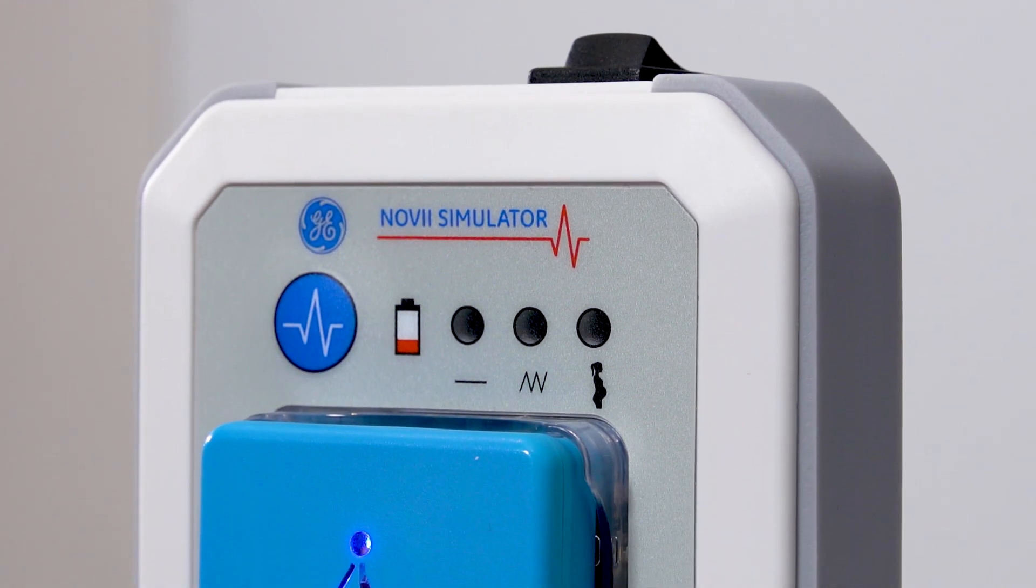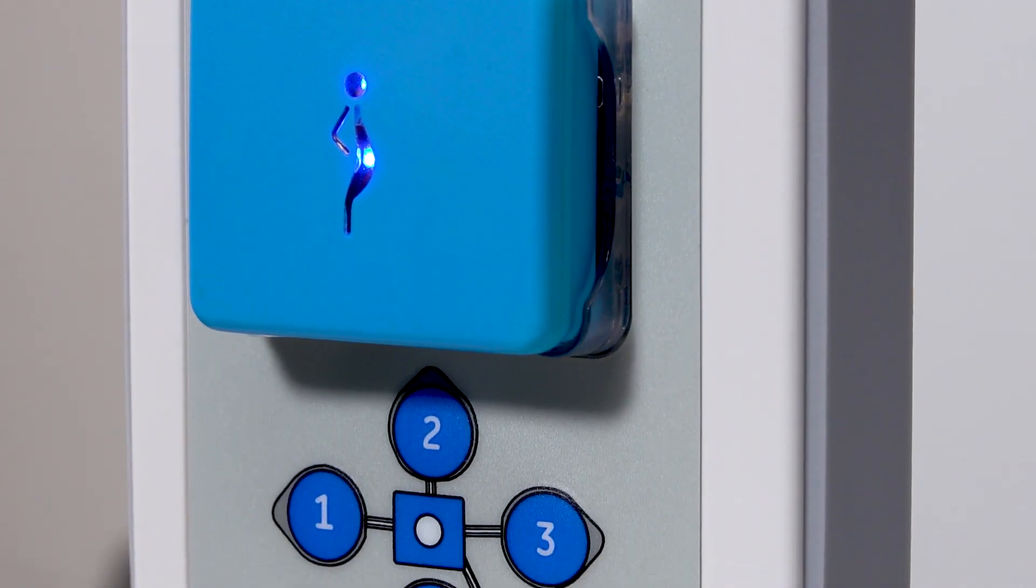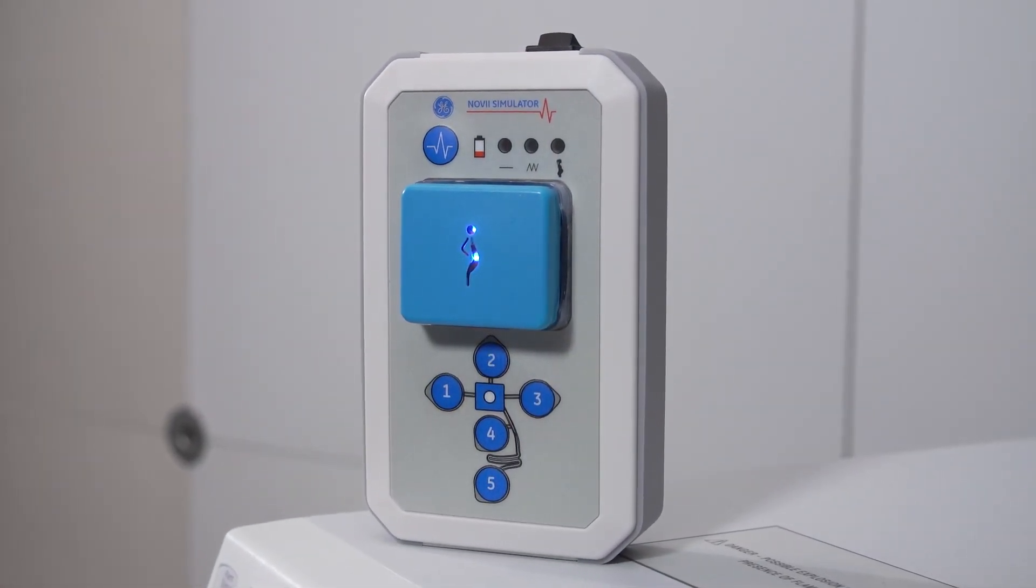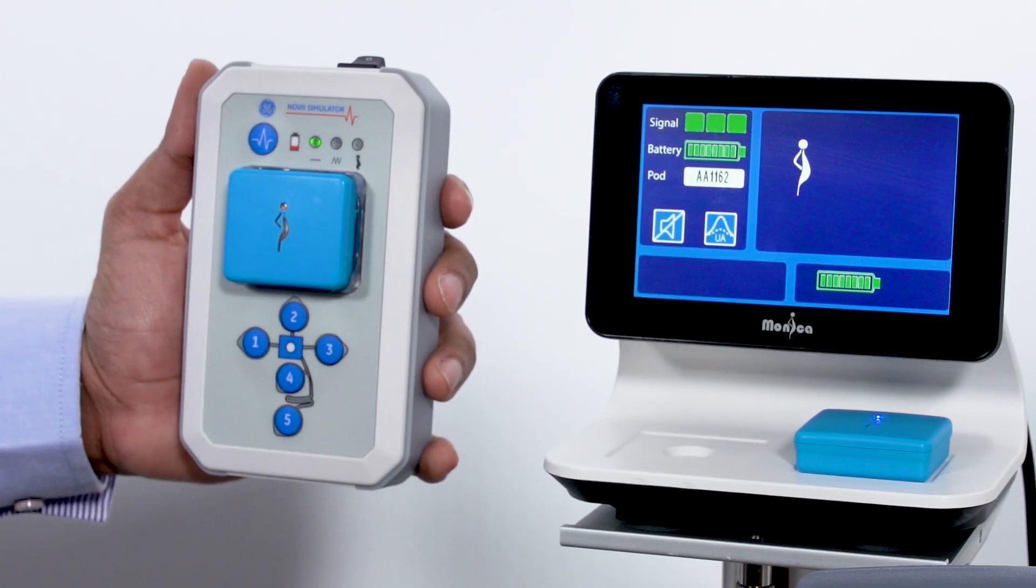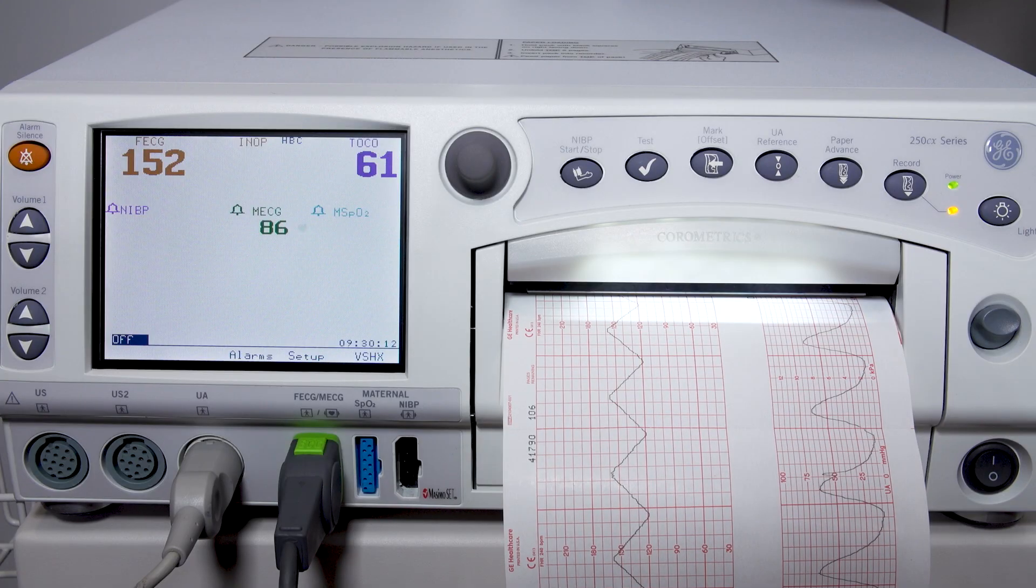In this training, we'll cover everything you need to know to use your Novi Simulator effectively, to troubleshoot, as well as demonstrate monitoring on the Novi wireless patch system, including how to operate the simulator to help guide your troubleshooting decisions, as well as how to properly clean the simulator. This training can be used on any version of the stand-alone Novi wireless patch system with Corometrics.